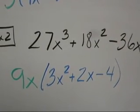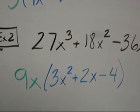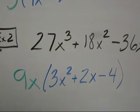So my final answer is 9x times the quantity, 3x squared plus 2x minus 4.